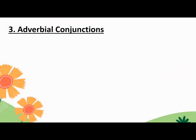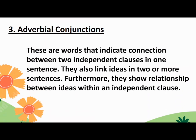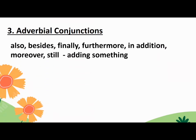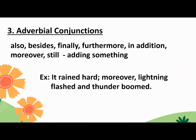The next type of transitional devices is adverbial conjunctions. These are words that indicate connection between two independent clauses in one sentence. They also link ideas in two or more sentences, and show relationship between ideas within an independent clause. Examples used in adding something are: Also, Besides, Finally, Furthermore, In addition, Moreover, Still. Example: It rained hard. Moreover, lightning flashed and thunder boomed.